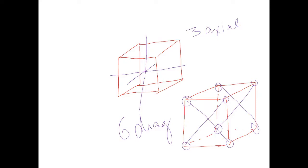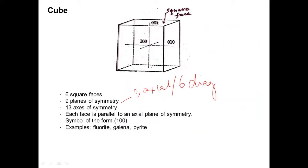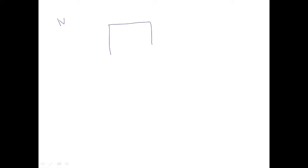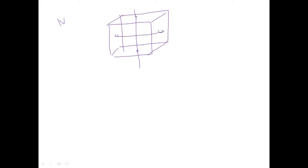There are 13 axes of symmetry in total: three axes of fourfold symmetry, four axes of threefold symmetry, and six axes of twofold symmetry. For the fourfold axis, if you hold the cube along the three main axes and rotate it, you get each face coming back once per quarter turn — so the three main axes give us the fourfold symmetry.